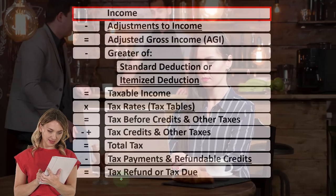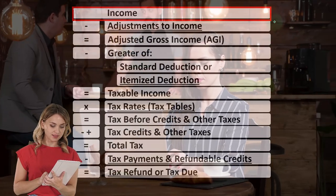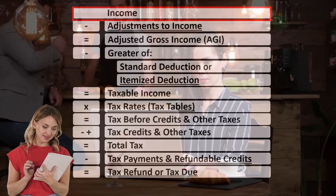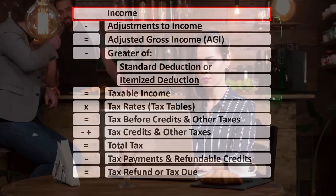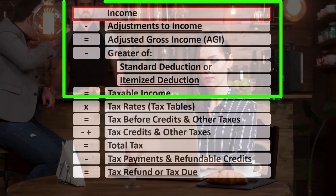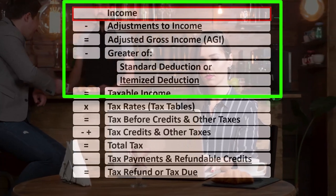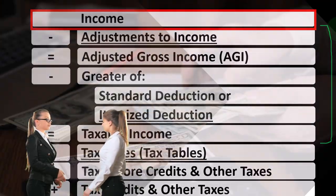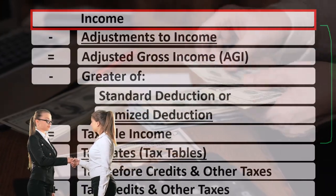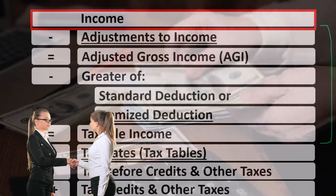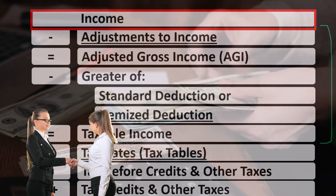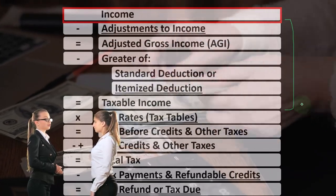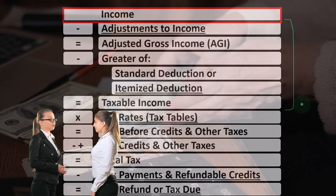Looking at the income tax formula, we're still focused on line one — income. Remember that the first half of the income tax formula is, in essence, an income statement. A strange one, where we have income up top, then the equivalent of expenses being deductions, to get down to the equivalent of net income — that being taxable income. Our goal is to get taxable income as low as possible.